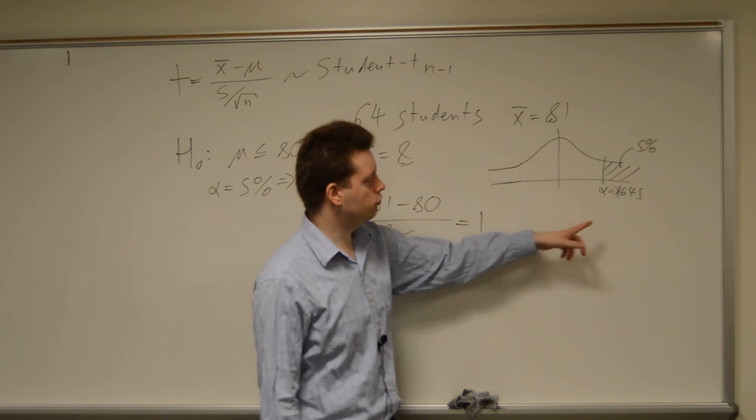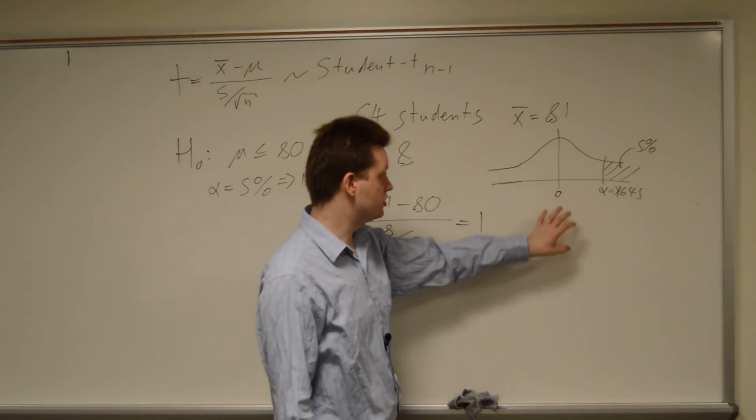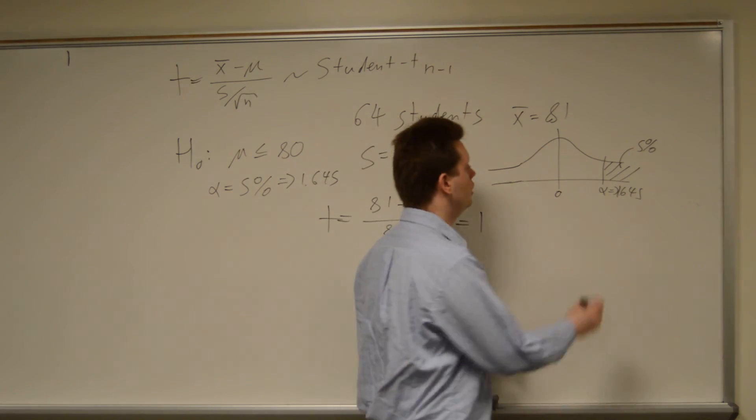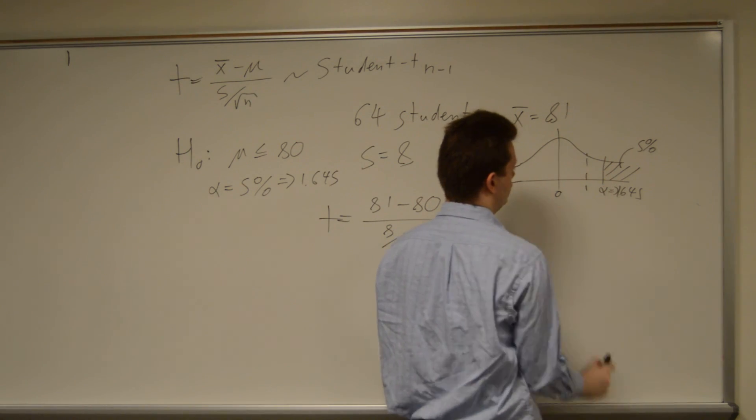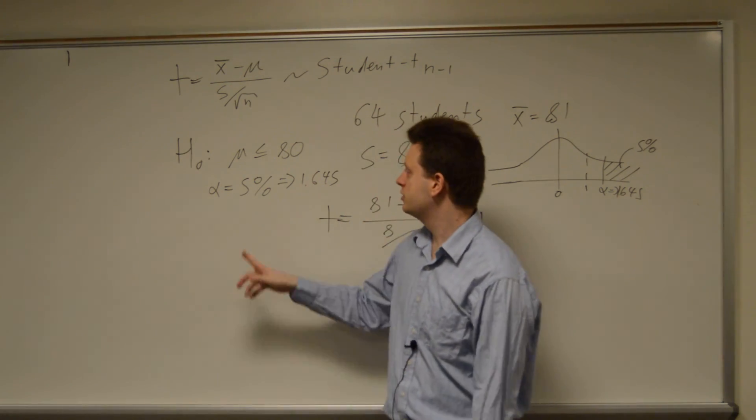Now, it turns out the value of 1 is obviously closer to 0, which is our mean here, because it's a standard normal table. This is 1. So we're not in this top 5%. And so we cannot reject this hypothesis.